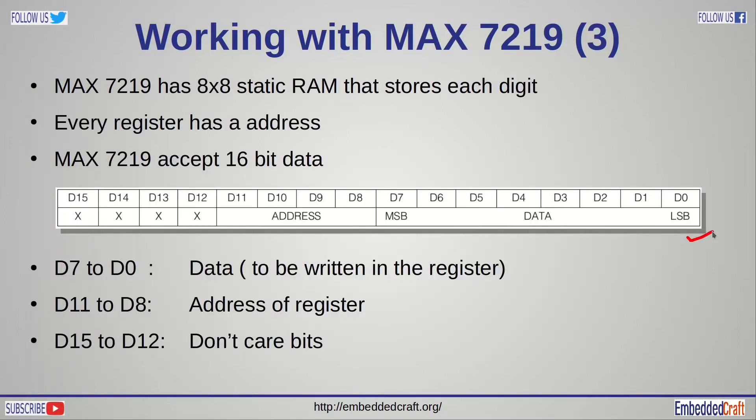Every register has 4 bits address. But data to SPI is transferred in 16 bits format. First 8 bits D7 to D0 will represent data which we want to write into a register. D11 to D8 will represent address of register. D15 to D12 are don't care bits. These bits can be considered as 0.